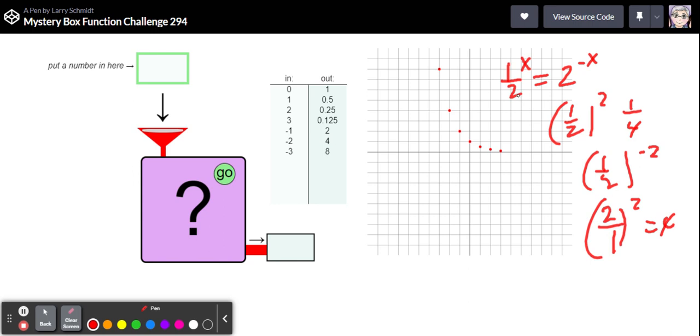So I think this is (1/2)^x or 2^(-x). It doesn't matter whichever way you write that, it's the same thing. Let's go ahead and take a look.